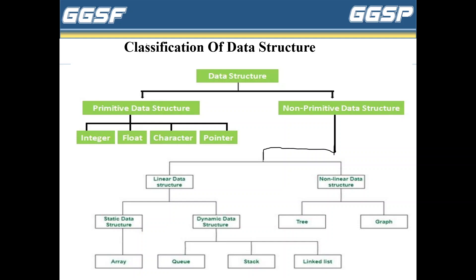Next, the classification of data structure. Data structures are classified into two parts: primitive data structure and non-primitive data structure. Under primitive data structure, we have integer, float, character, and pointers. Any keyword found in the form of a data type in programming is known as a primitive data structure.